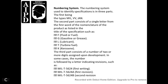The third part is a number of two or more digits assigned during development. In some cases the number is followed by a letter revision identifier. For example: MIL-T-5624 is the first writing; MIL-T-5624A is the first revision; and MIL-T-5624B is the second revision.